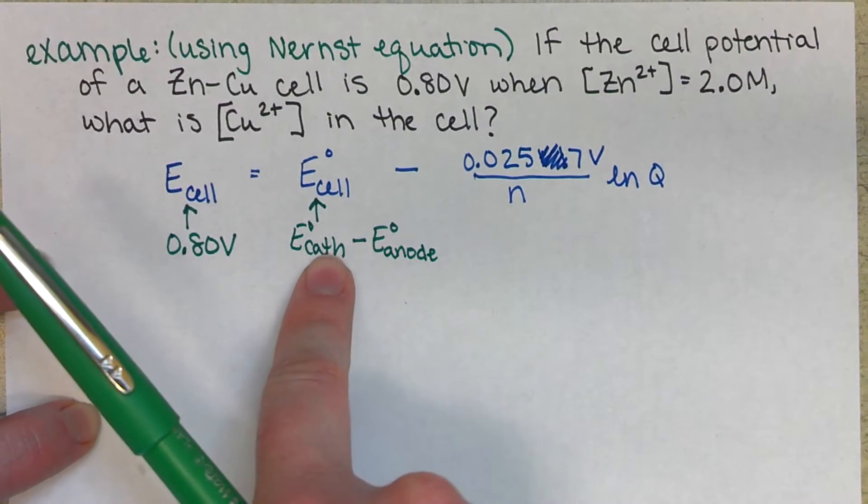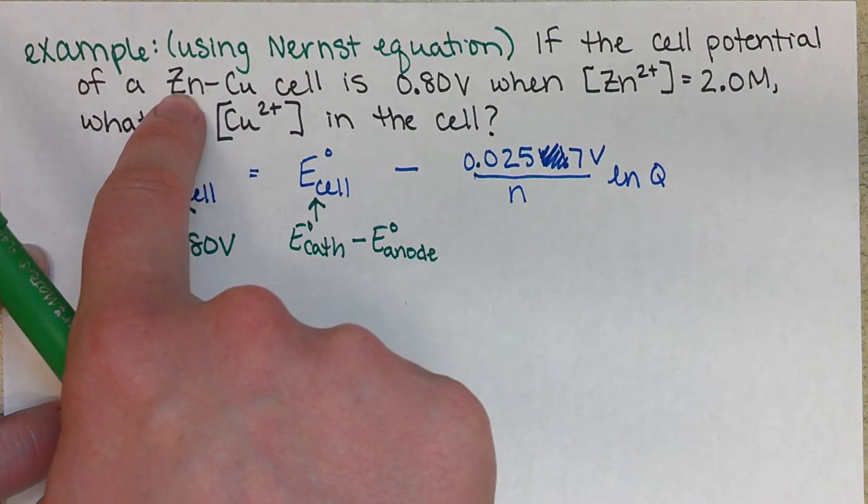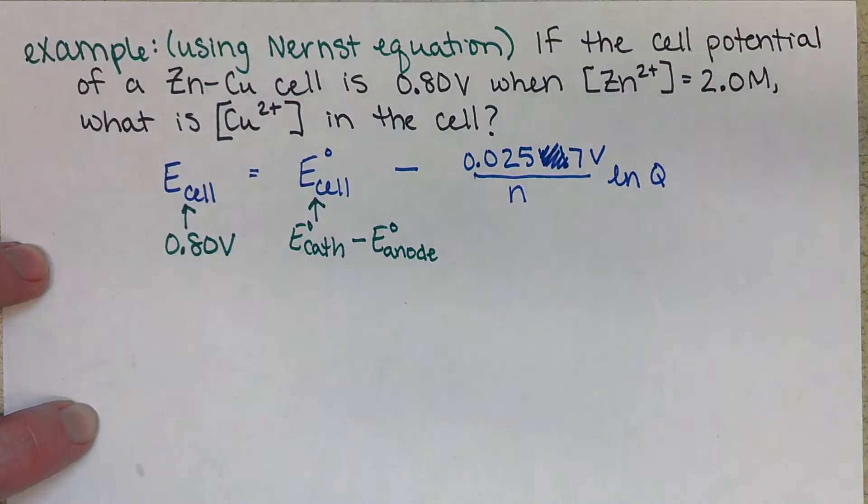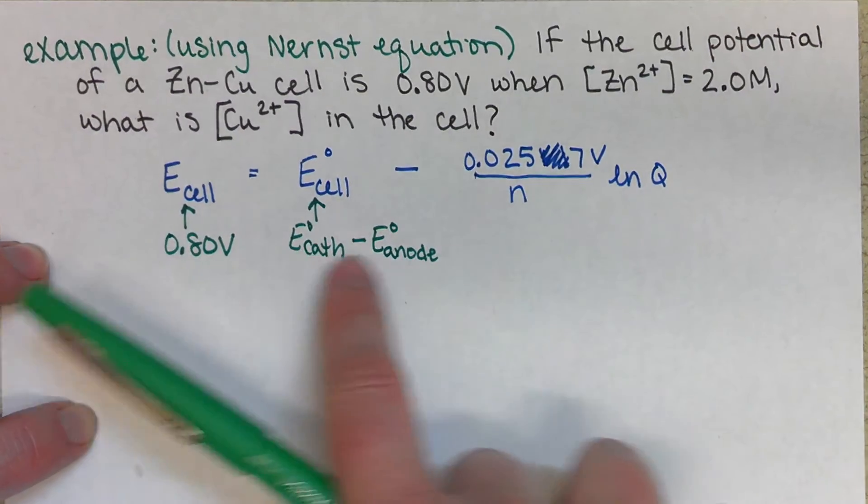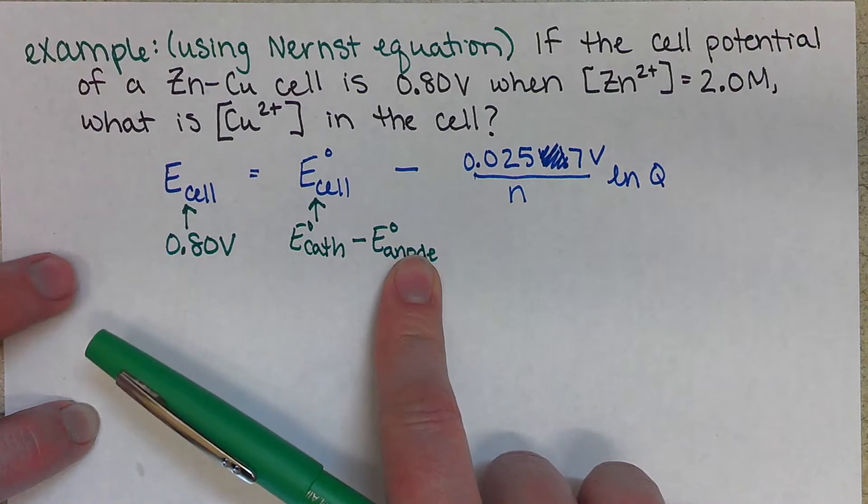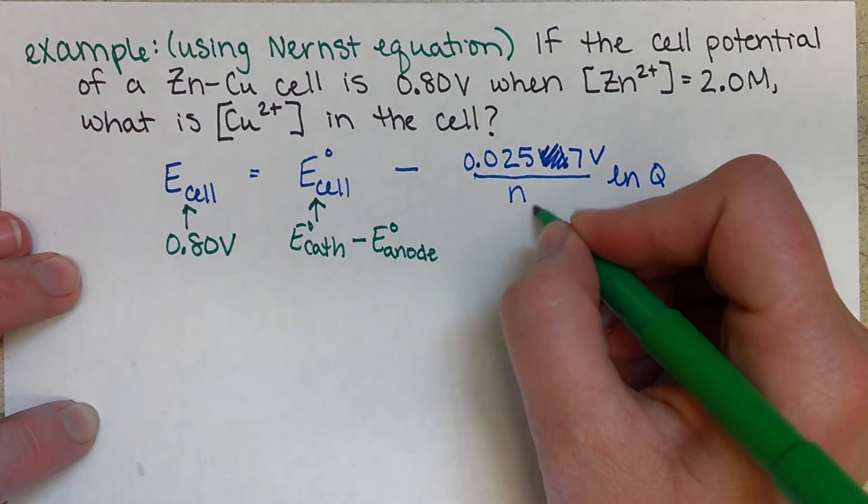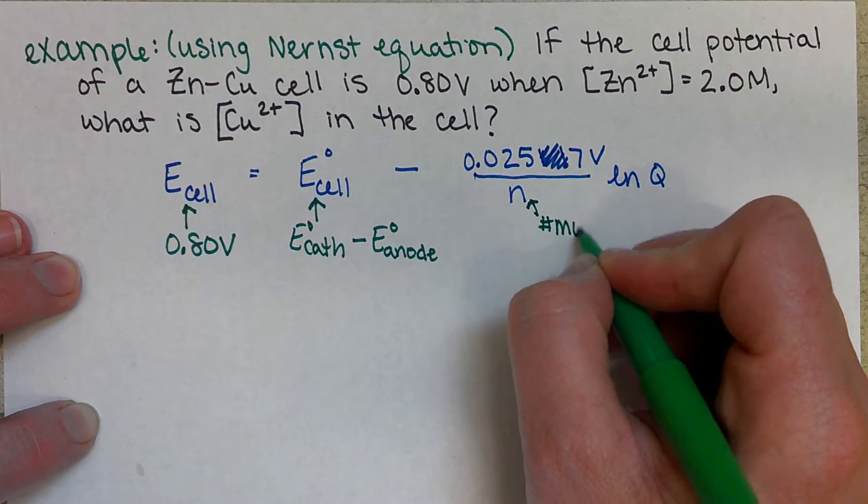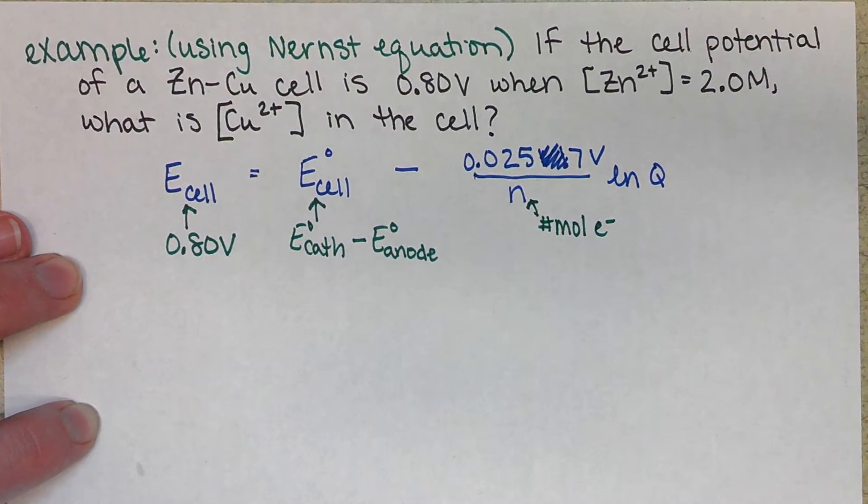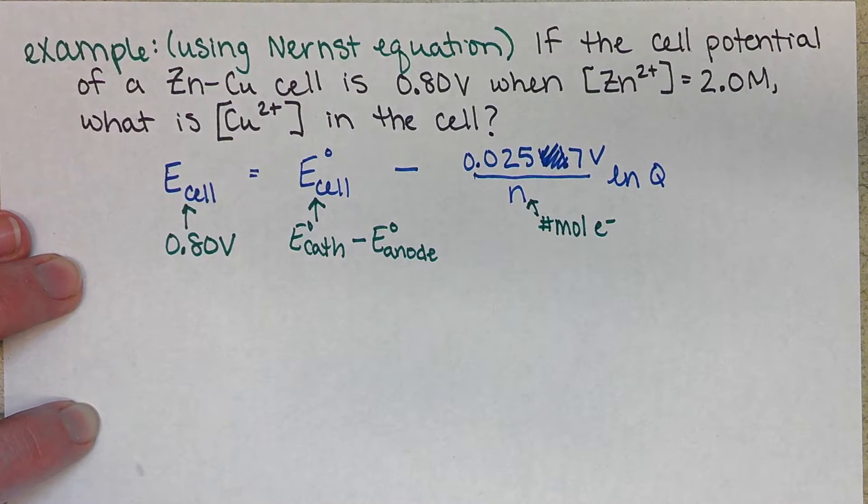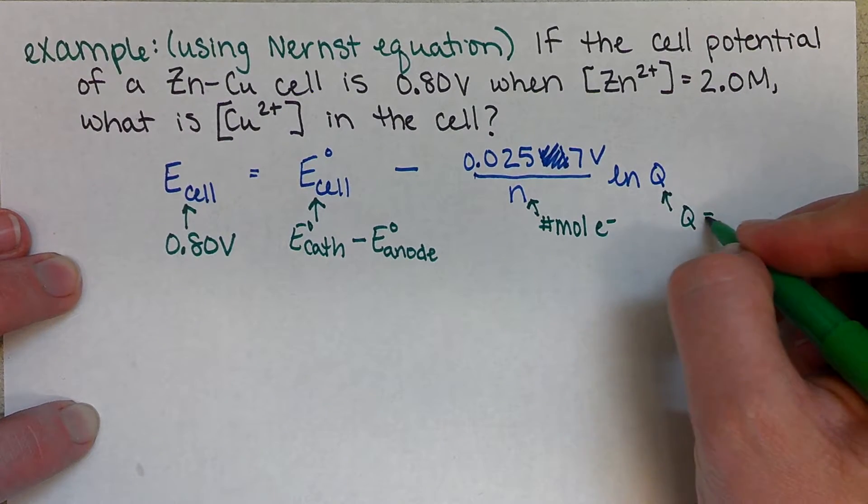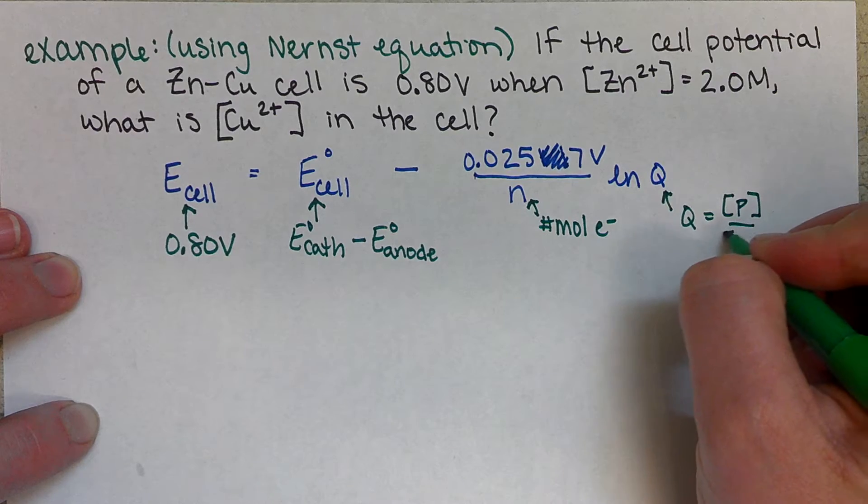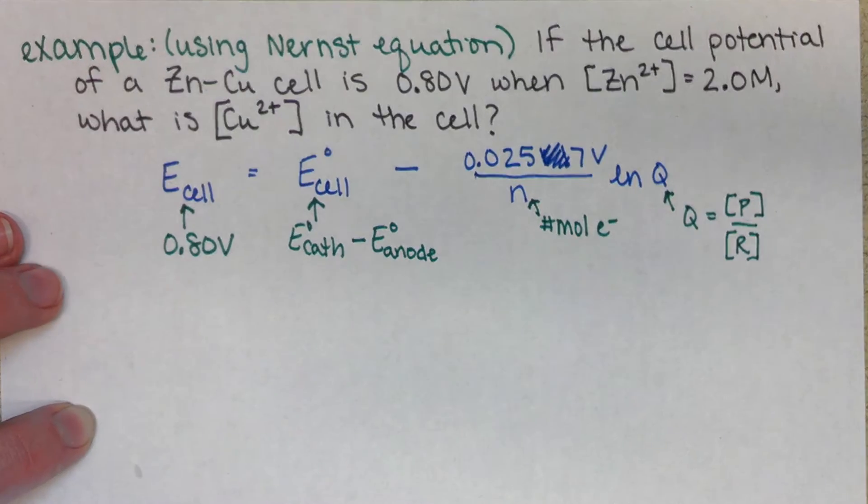We're going to look at our two half-cell reactions, one having zinc, one having copper, and we'll have to look at the standard reduction potentials to see which one's going to be the cathode and which one will be the anode. When we determine what's the cathode and the anode, we'll know our half-cell reactions, so we can then determine what N is. We'll be able to see how many moles of electrons are involved in this reaction. Then we can add our two half-reactions together to get our overall reaction, which will allow us to set up our equation for Q, which is our products over our reactants.